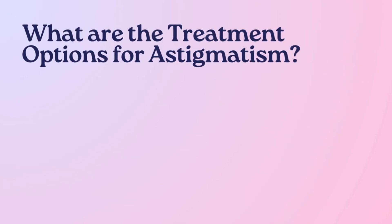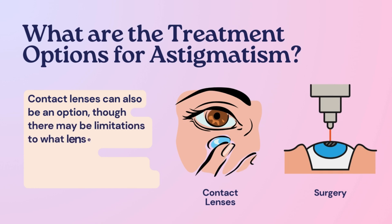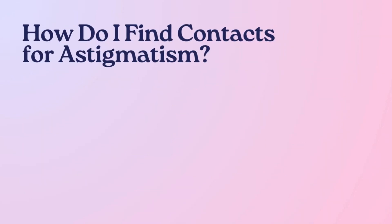What are the treatment options for astigmatism? Contact lenses can be an option, though there may be limitations to what lenses will fit and correct vision appropriately. Surgery is another treatment option.